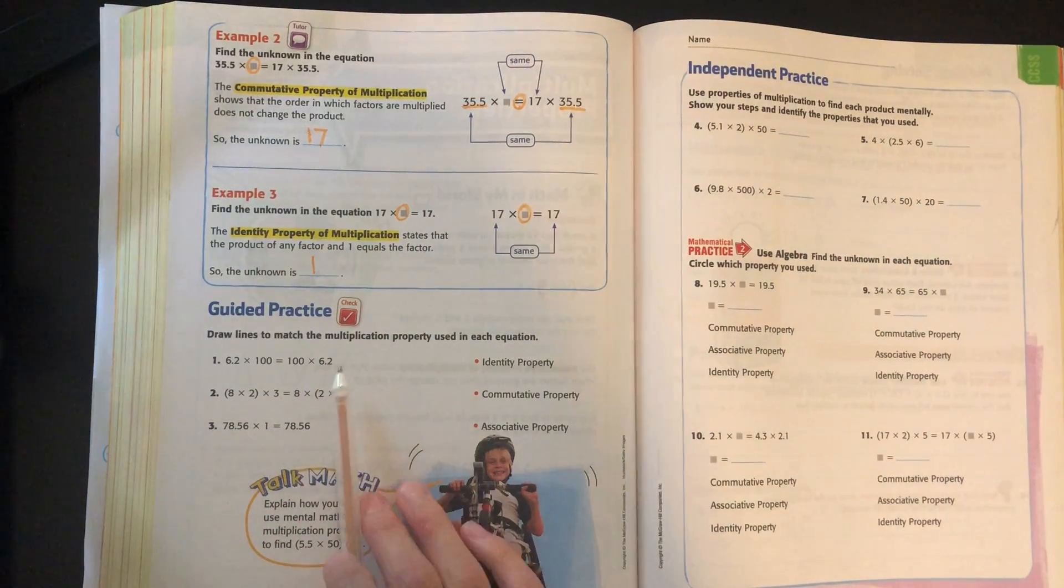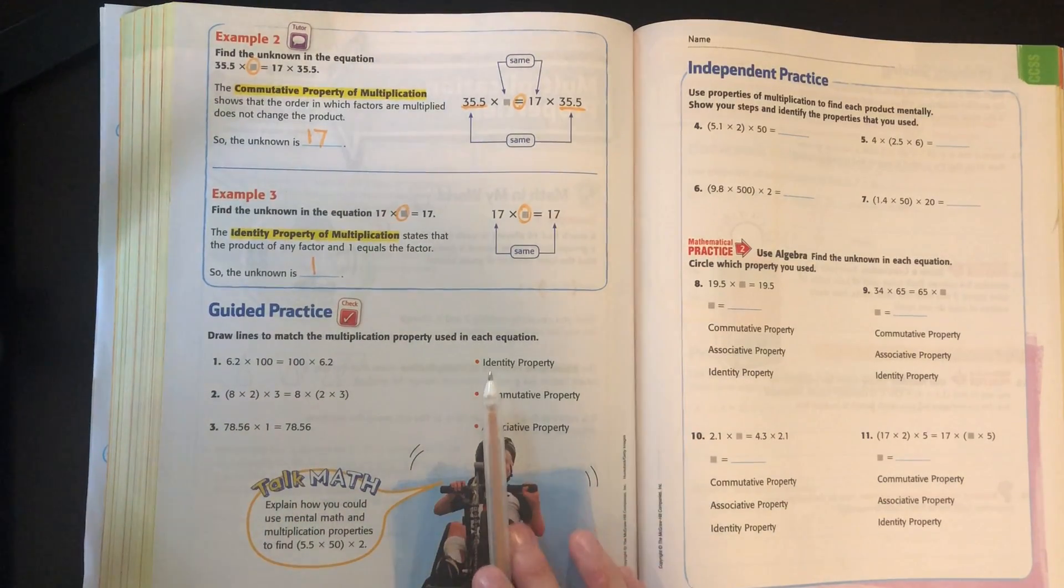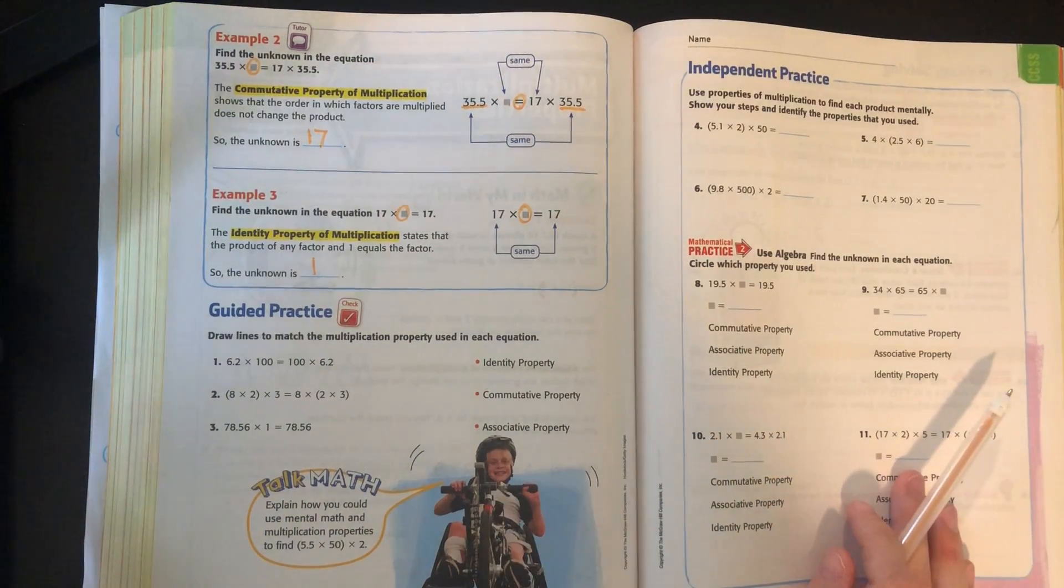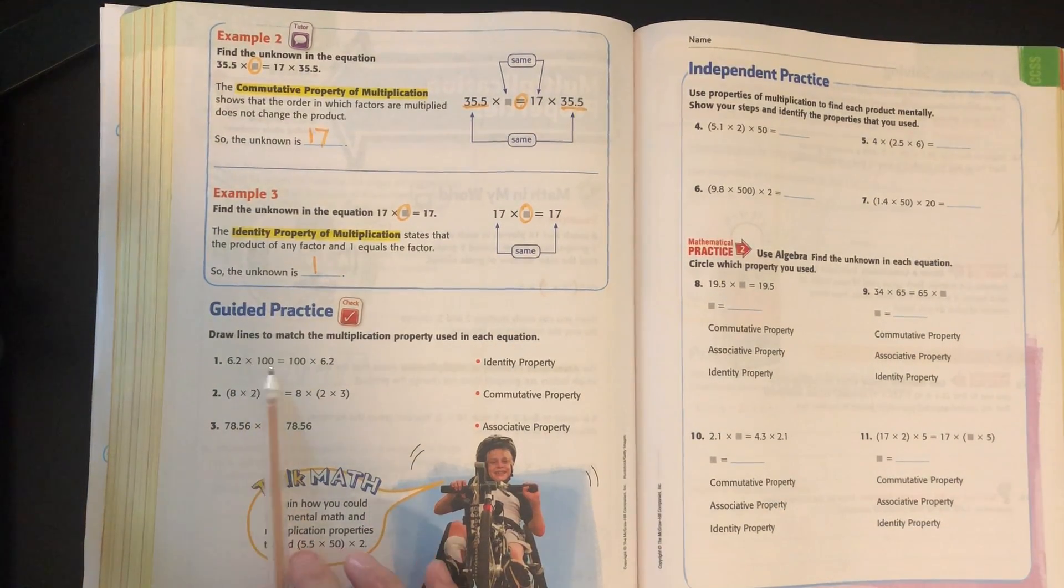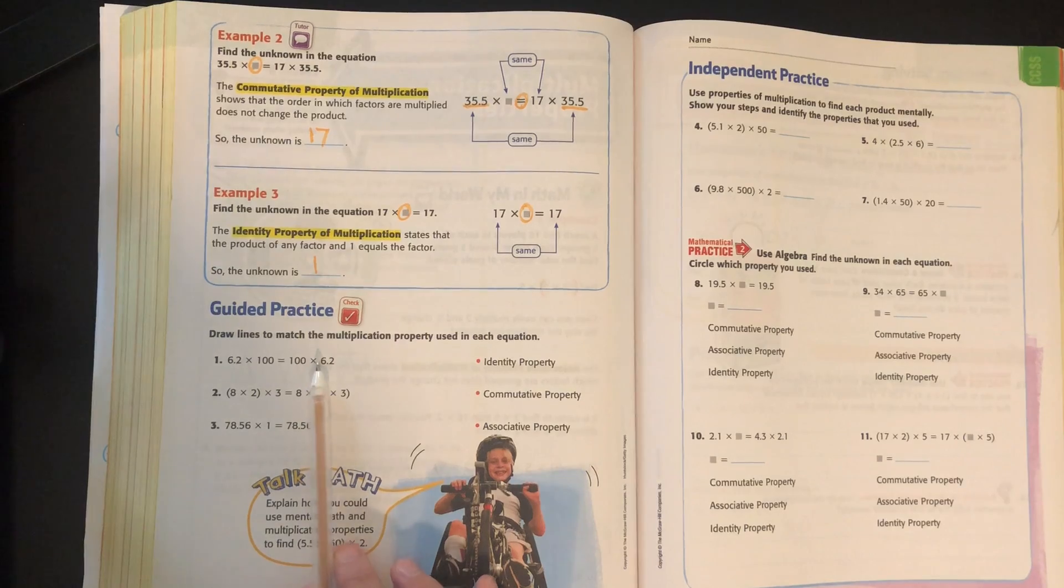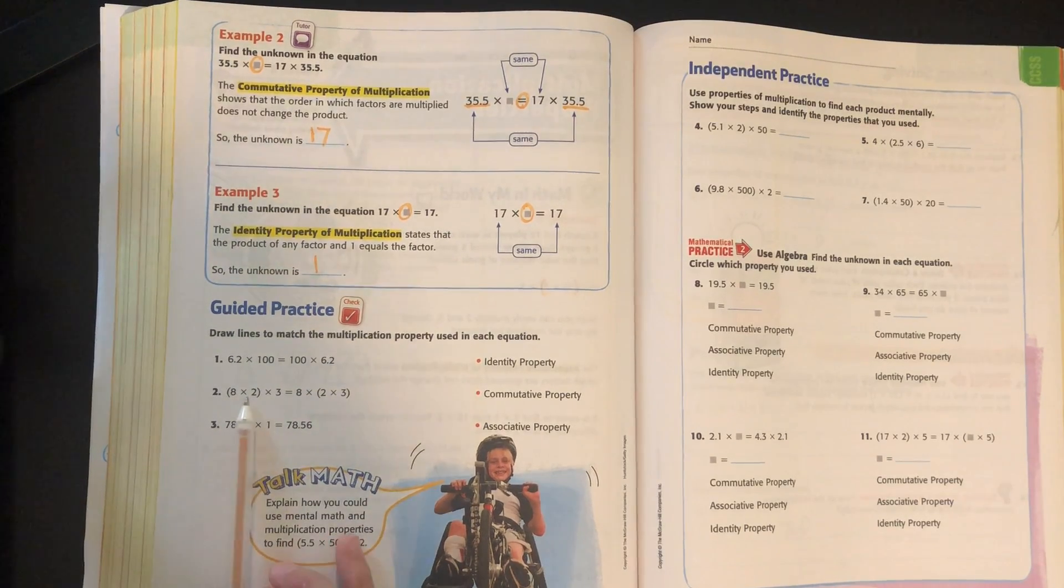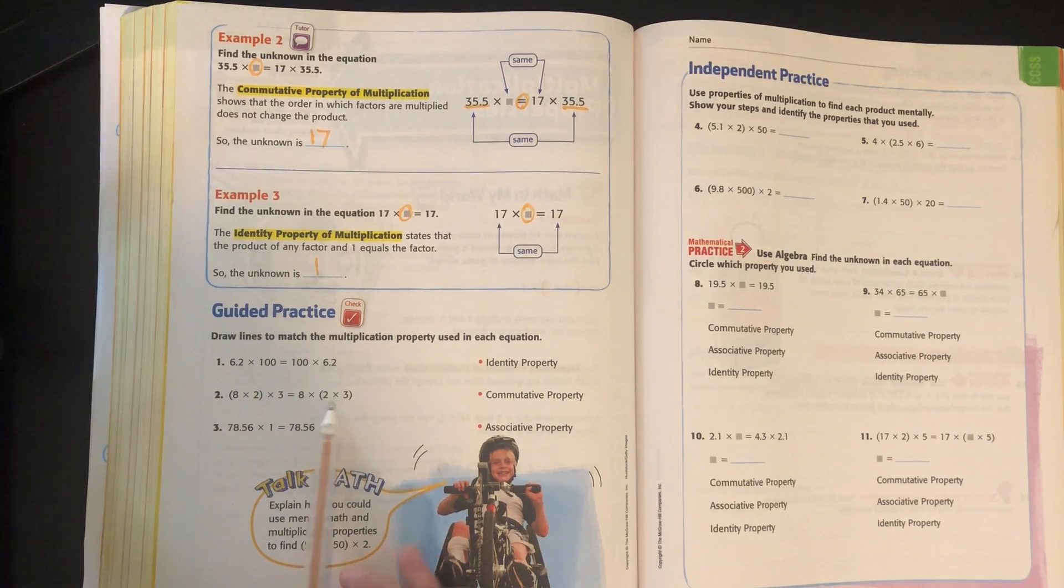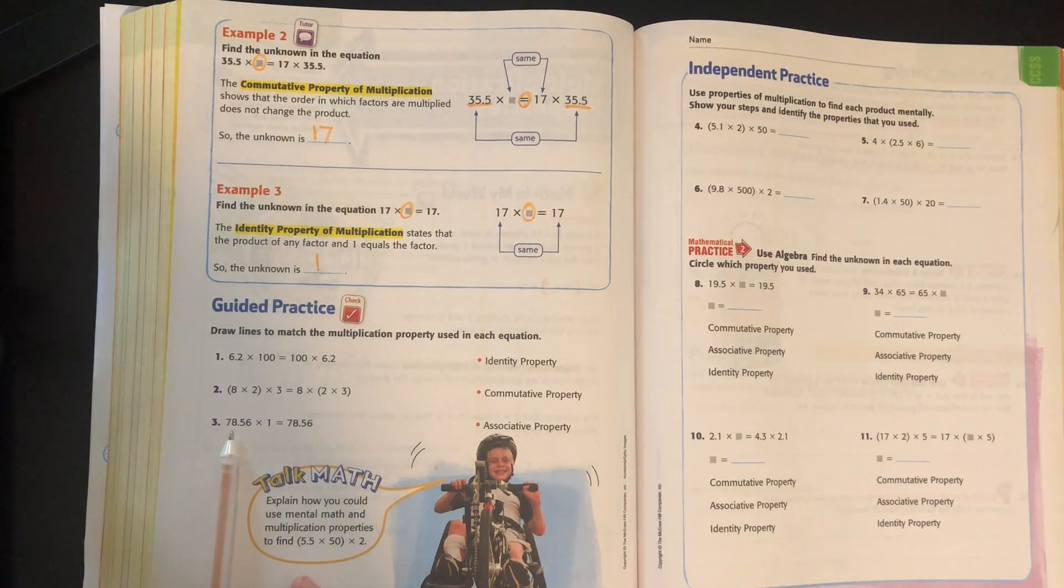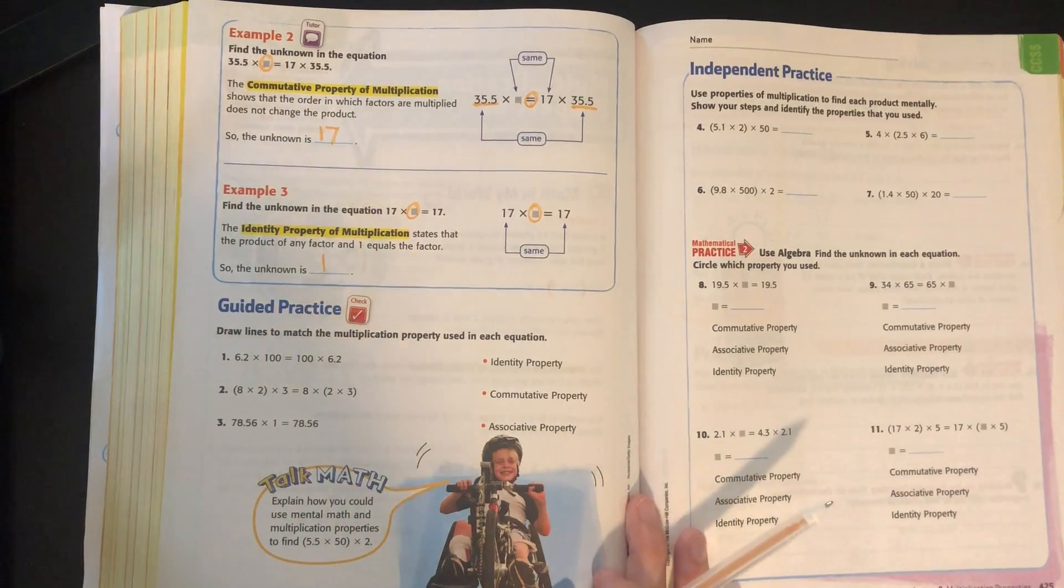So for our guided practice, we have three different equations, and we need to decide which property is being used in each equation. So we have 6 and 2 tenths times 100 equals 100 times 6 and 2 tenths. We have 8 times 2 times 3 equals 8 times 2 times 3. And 78 and 56 hundredths times 1 equals 78 and 56 hundredths.